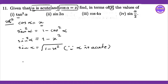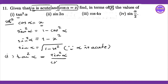So sin alpha equals x and cos alpha equals x. Now for tan squared alpha: tan squared alpha equals sin squared alpha divided by cos squared alpha. And cos squared alpha equals x squared, sin squared alpha equals one minus x squared.